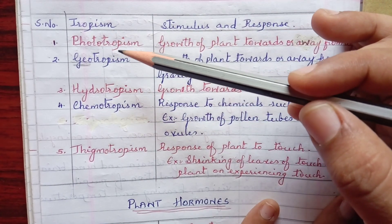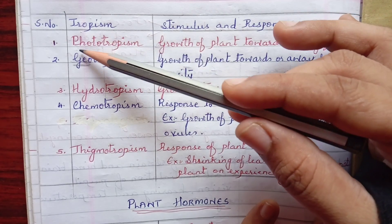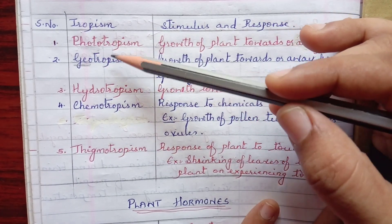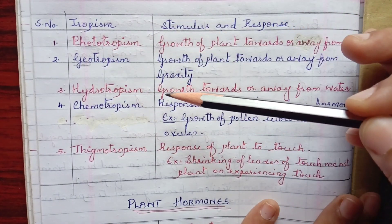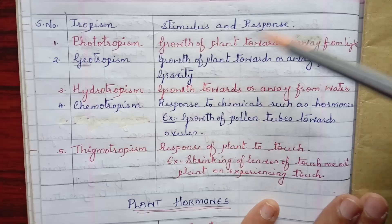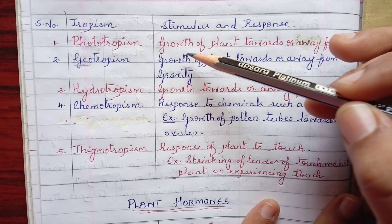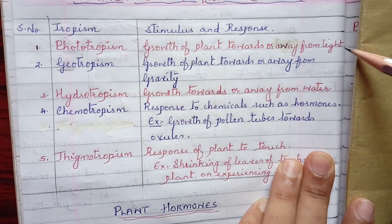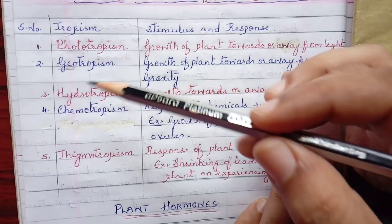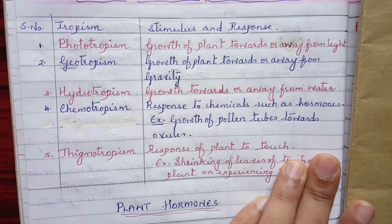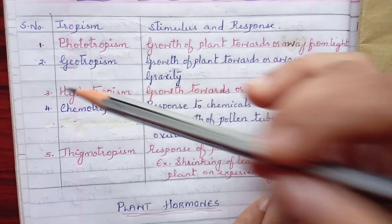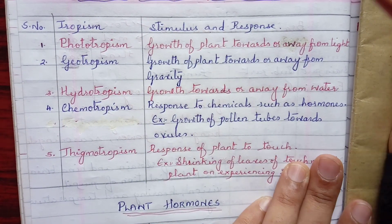The first one is phototropism. 'Photo' refers to light, so this is the response of the plant towards light — either the plant is growing towards light or away from light. That is phototropism.